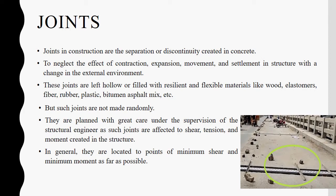First we want to know about what are Joints. Joints in construction are the separation or discontinuity created in concrete to neglect the effect of contraction, expansion, movement and settlement in a structure with a change in external environment. But these joints are not made randomly. They are planned with great care under supervision of a structural engineer, as such joints are affected by shear, tension and moment created in the structure. In general, they are located at points of minimum shear and minimum moment as far as possible.